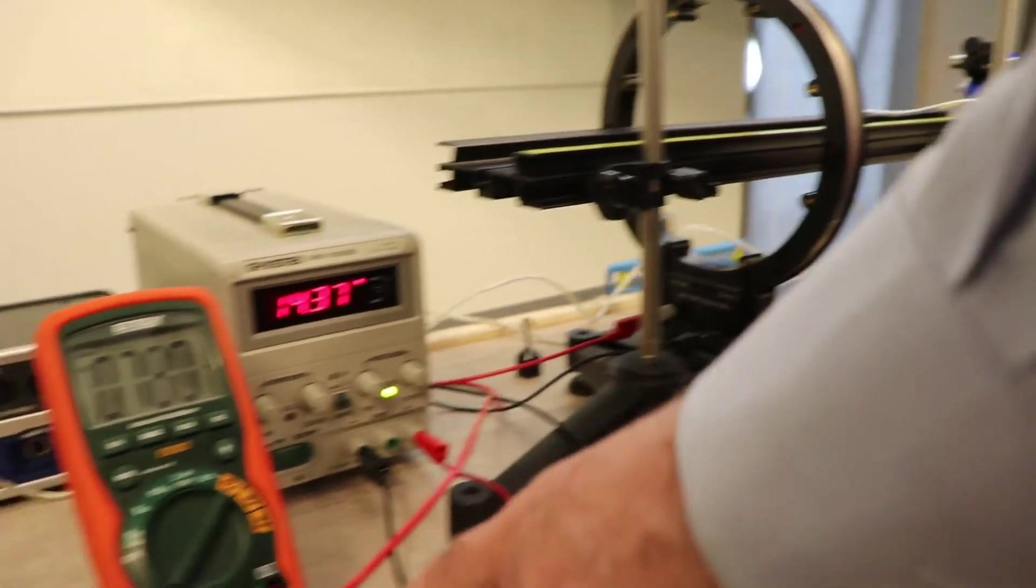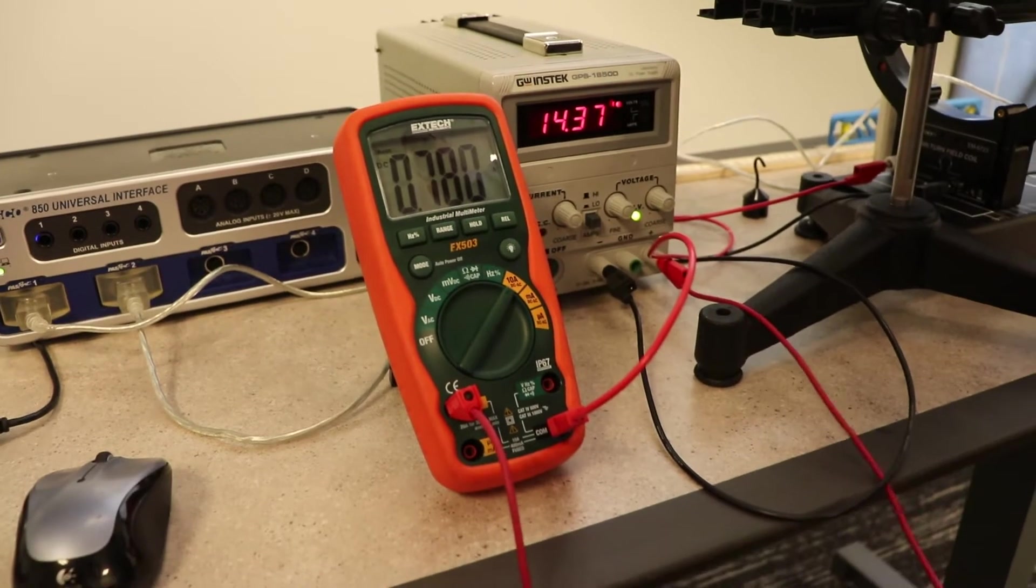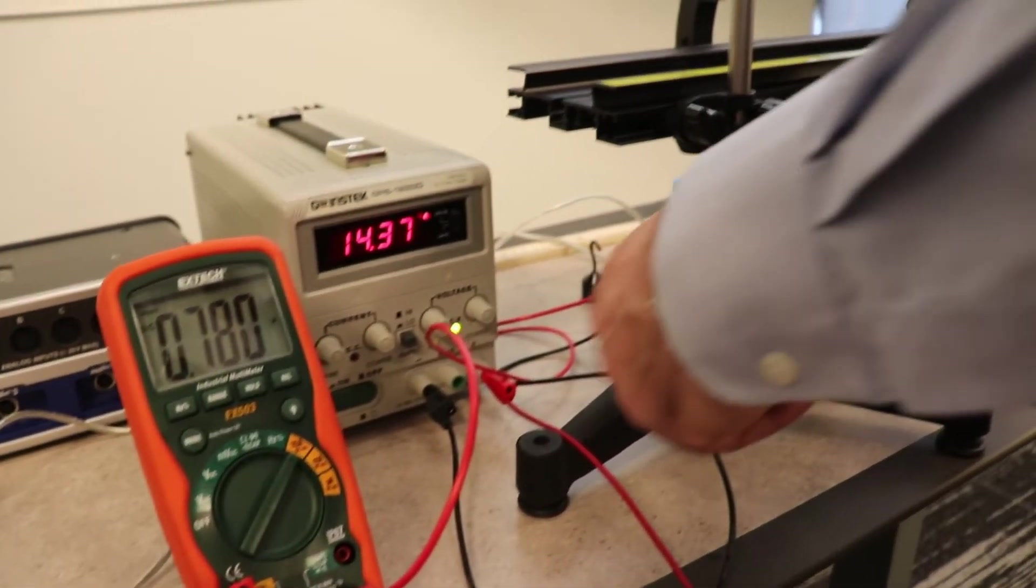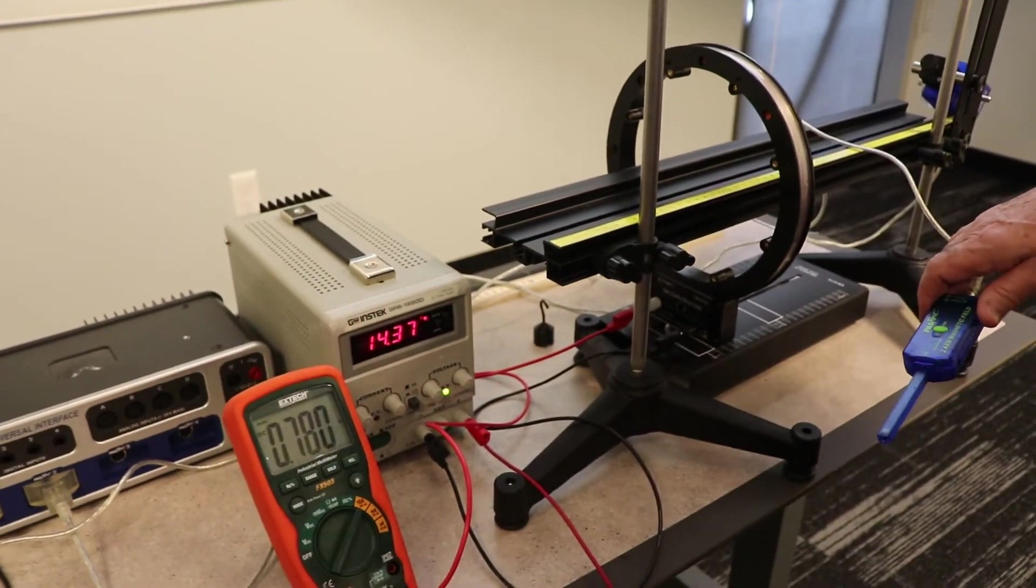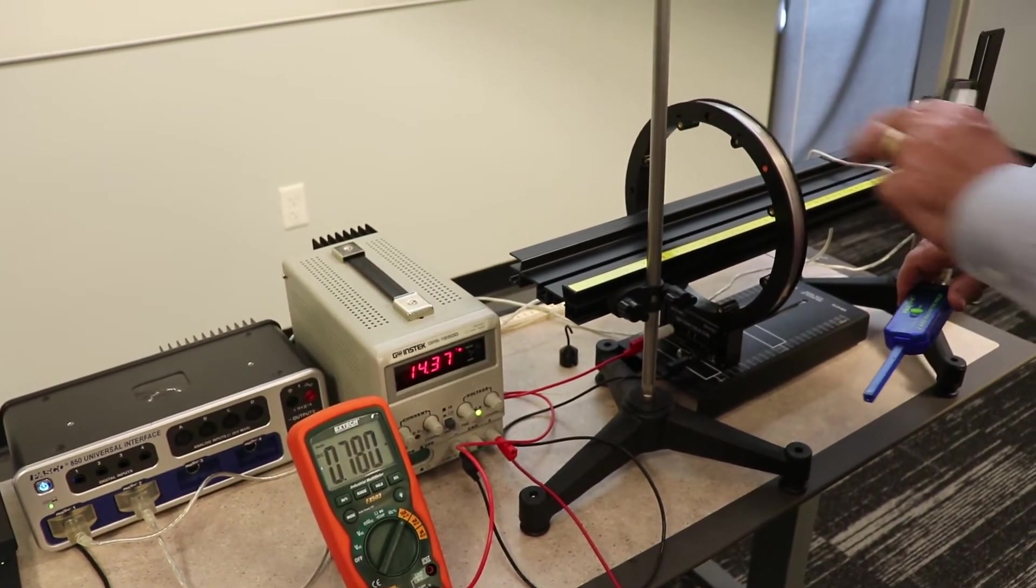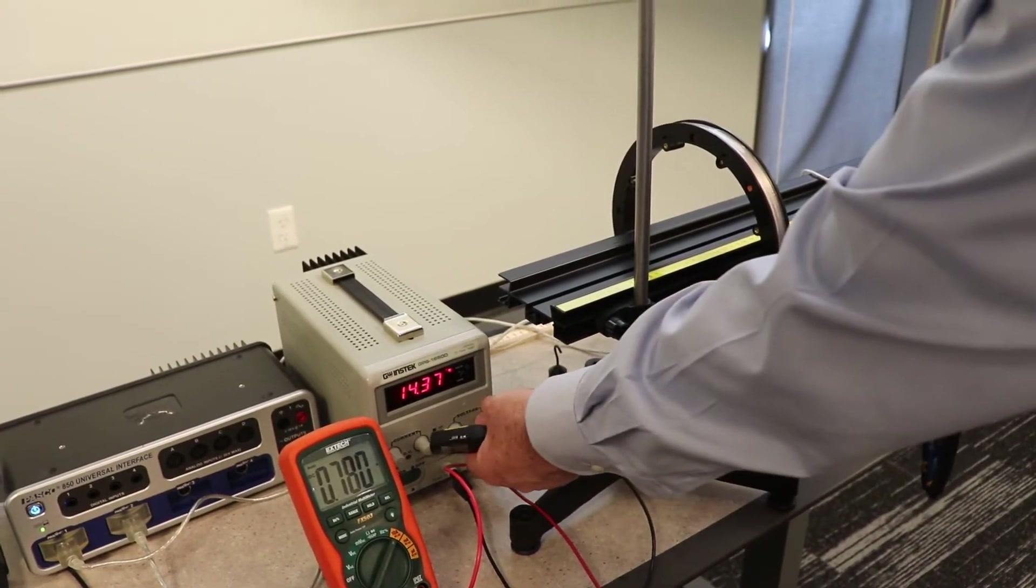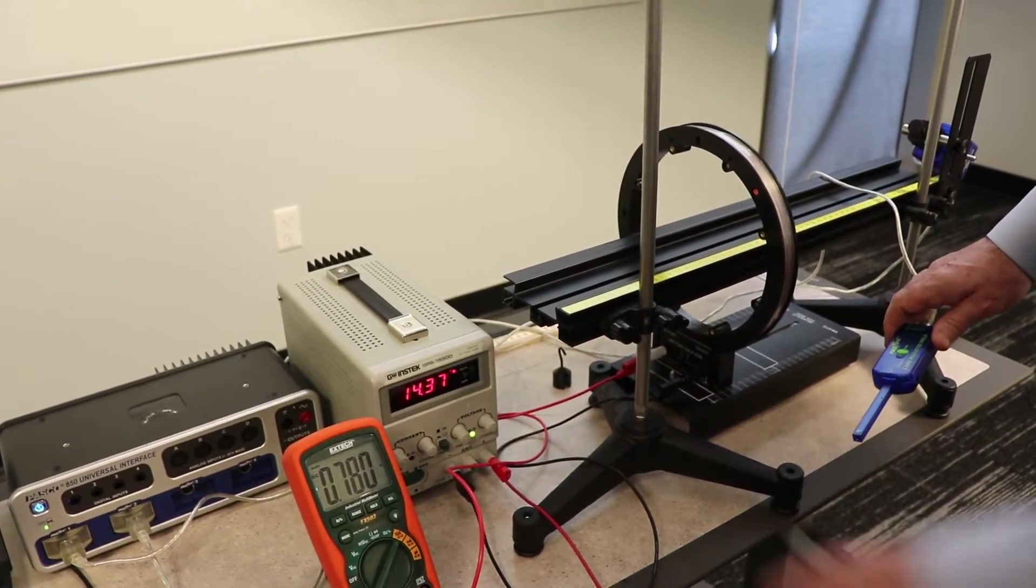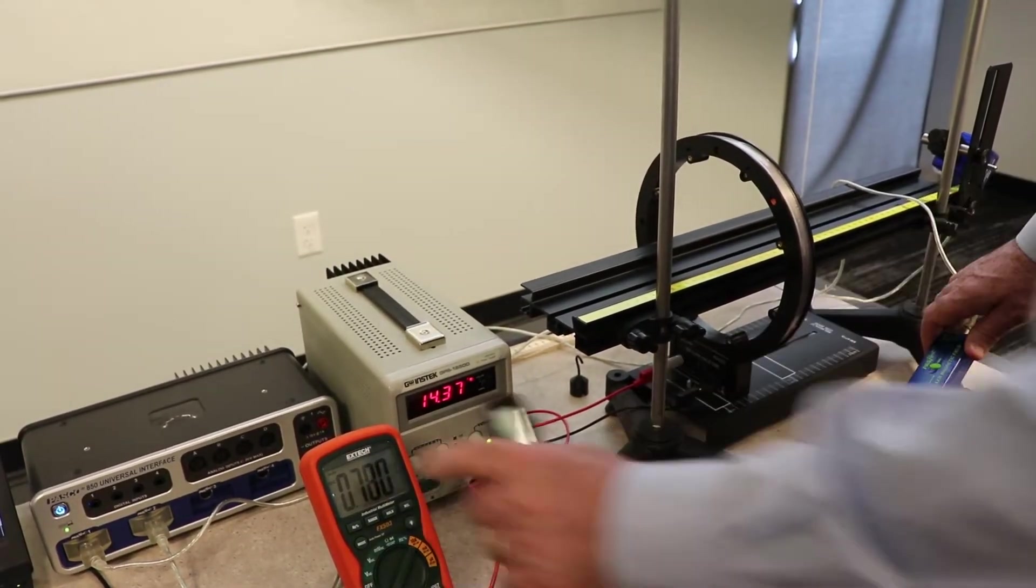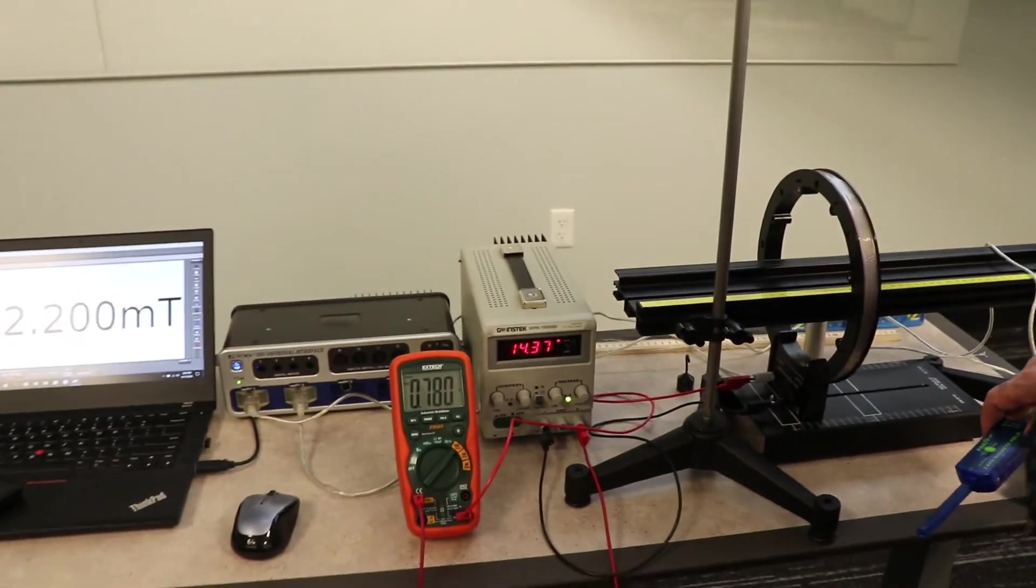I'm measuring the current with an ammeter. You can see the circuit: power supply at 14 volts goes to the ammeter, then to the coil, then back. Since the coil has resistance, I can control the current by adjusting the voltage. I'm not really interested in the voltage value - I'm using this ammeter to track the current. We'll vary the current and measure the resulting B field.